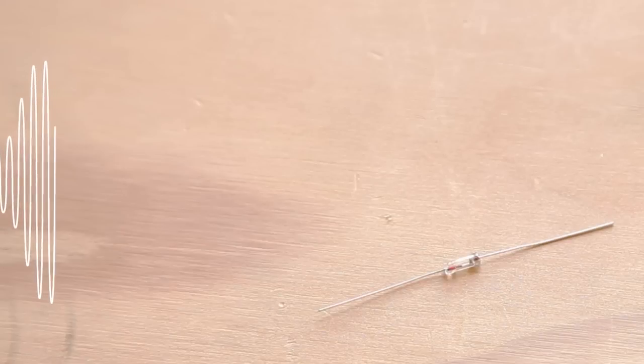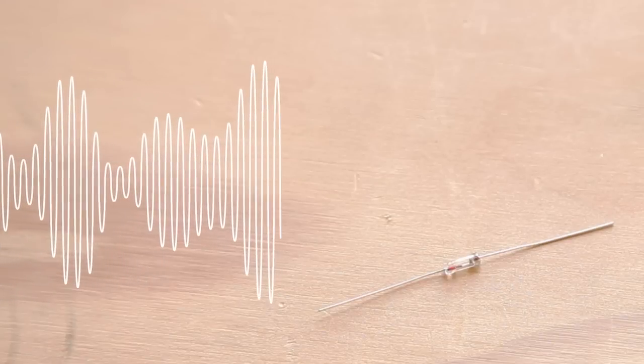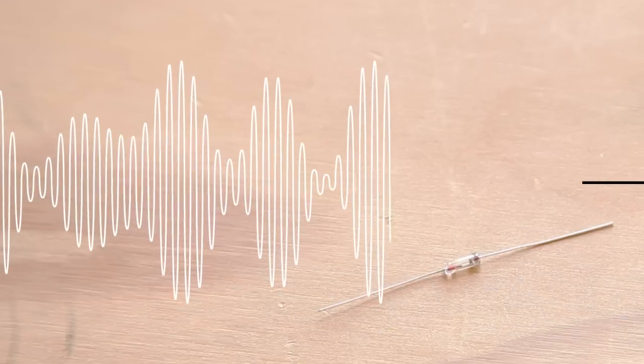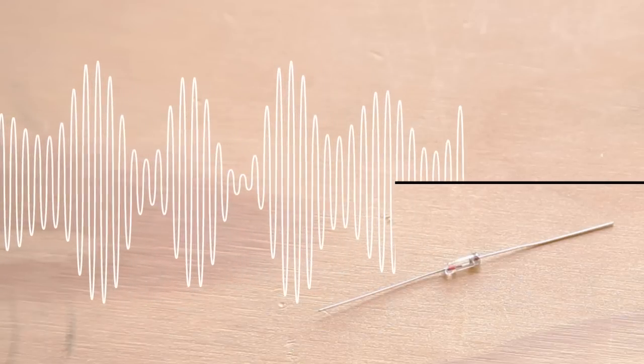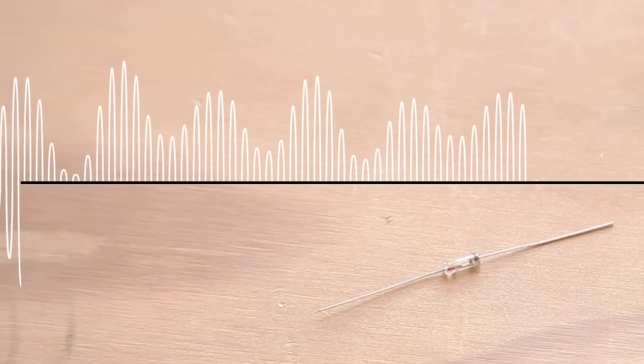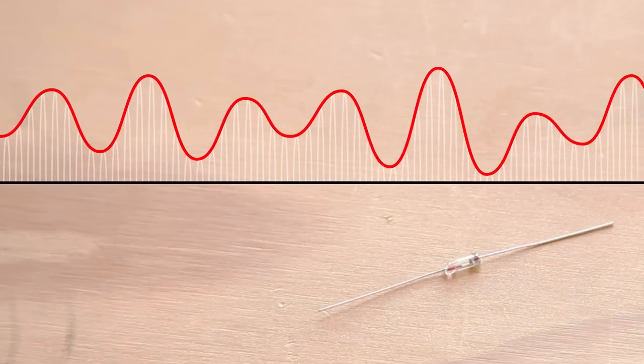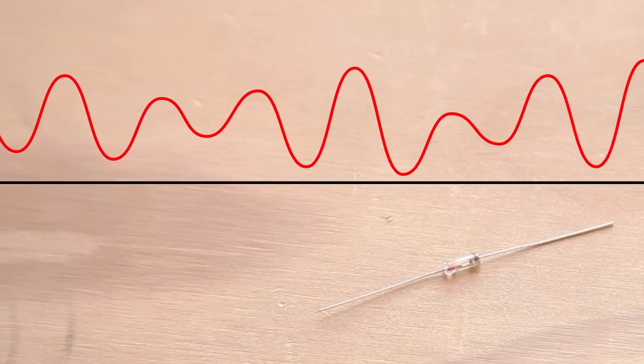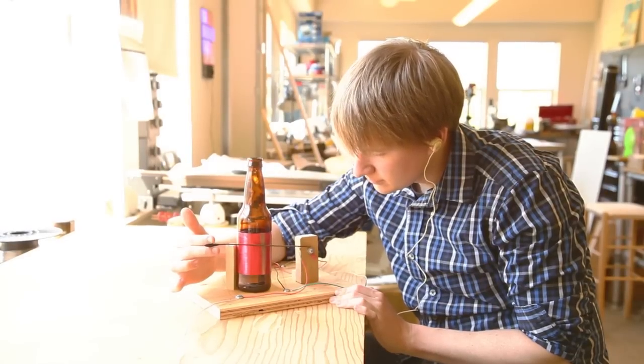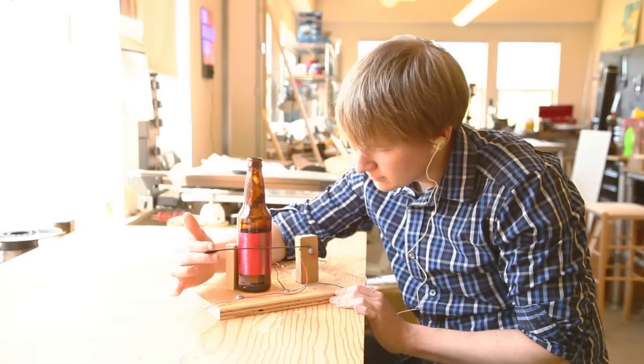When signal enters the diode, its envelope contains positive and negative peaks. The diode, only allowing voltage to pass in one direction, blocks the negative peaks of the signal and lets the positive peaks of the signal proceed. Thus, the diode rectifies the signal from an alternating current to a direct current. This current vibrates the diaphragm inside the crystal earphone, which the sensitive human ear translates to audio.